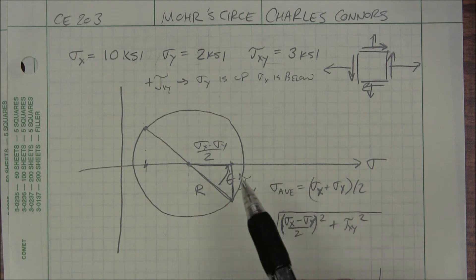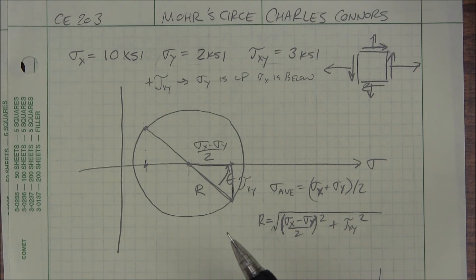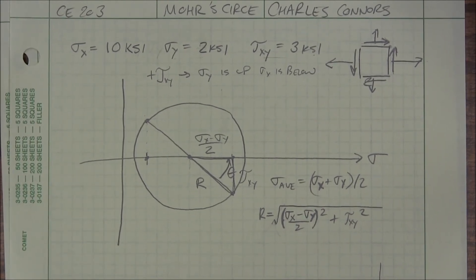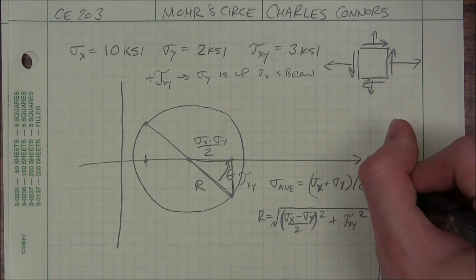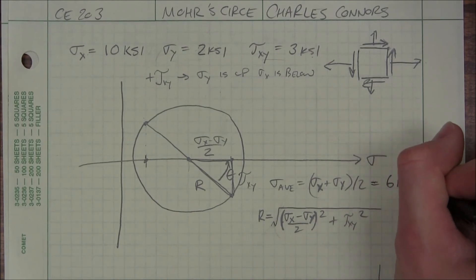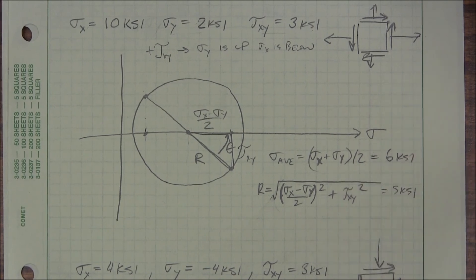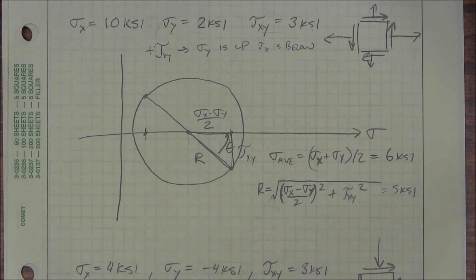And since this is a 3-4-5 triangle, I could easily know that my radius is 5. I don't even have to plug it into my formula. I've drawn my Mohr circle. I could know that it's 5 without even plugging anything in. The sigma average equals 6 KSI and the radius equals 5 KSI. I don't even have to plug it in. I just know it from Mohr circle.